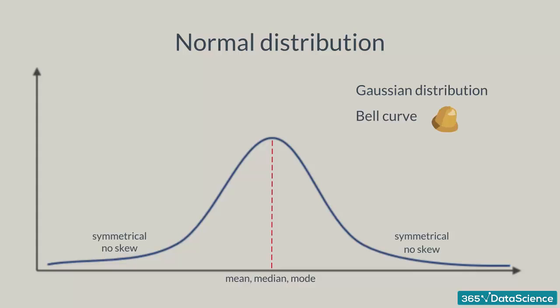Alright, so it is denoted in this way. N stands for normal. The tilde sign denotes it is a distribution and in brackets we have the mean and the variance of the distribution.